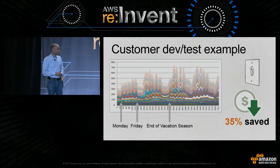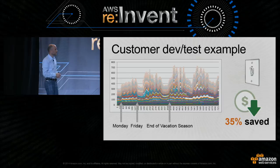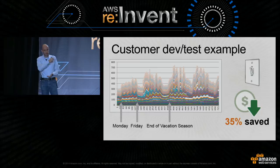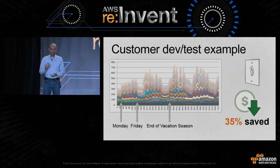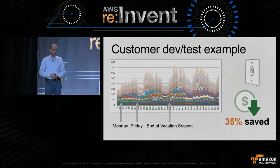Here's a customer example. In the EC2 usage graph, you can identify weekdays, weekends, and even the end of vacation season based on usage. This customer was able to save 35% of EC2 costs just by turning off developer, test, and QA instances — a huge cost-saving potential.